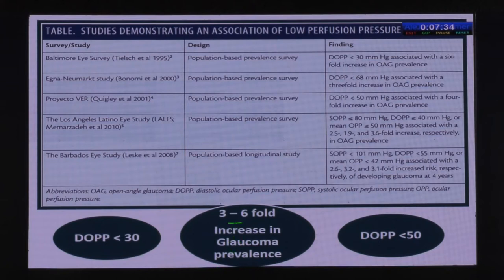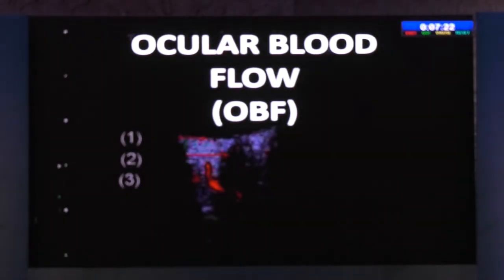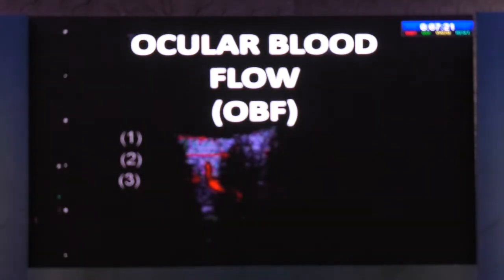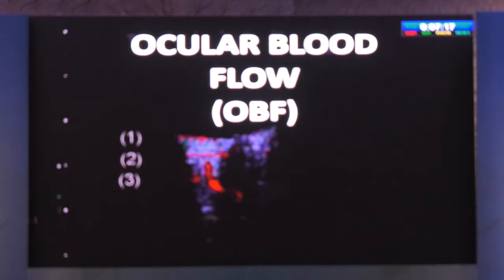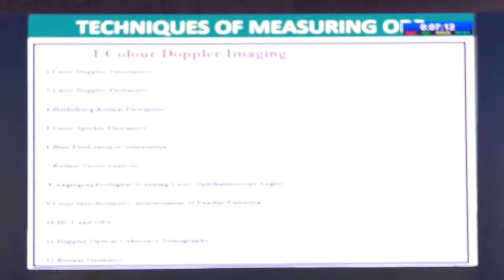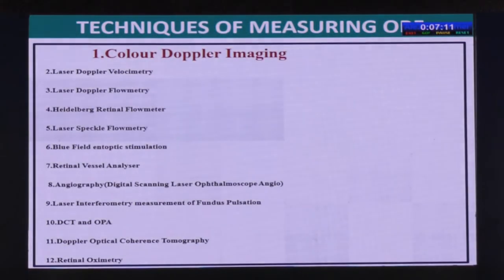We know there is a three- to six-fold increase in glaucoma prevalence with low ocular perfusion pressure — but what is that value? Some studies say less than 30 mmHg diastolic ocular perfusion pressure; some say less than 50. Because ocular perfusion pressure is a surrogate derived factor, it is not truly concrete, and so we move to measuring something more definitive: ocular blood flow.